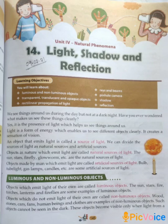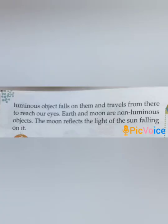Objects which do not emit light of their own are called non-luminous objects. For example, wood, stones, cars, pans, human beings, and cloths, etc. Such objects cannot be seen in the dark. These objects become visible only when light from a luminous object falls on them and travels from there to reach our eyes. Earth and moon are non-luminous objects. The moon reflects the light of the sun falling on it.